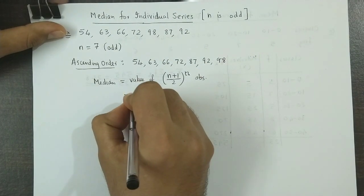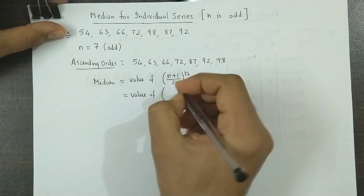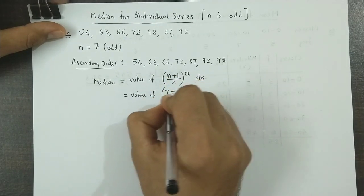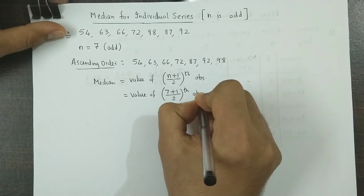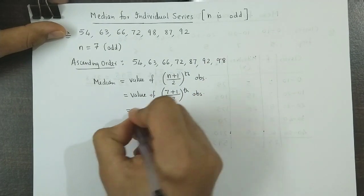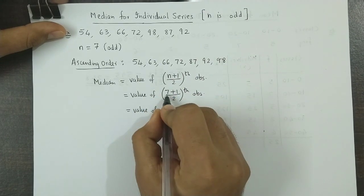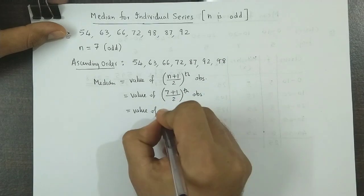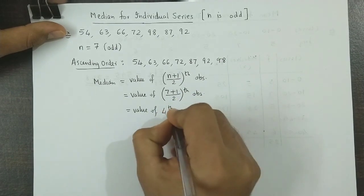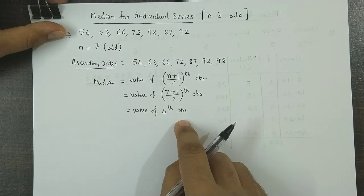So that is the value of... Now let us substitute the value of n that is 7 plus 1, 1 by 2 observation. So further we write the value of 7 plus 1 is 8. 8 divide by 2 is 4. So it is the value of the fourth observation in the ascending order.